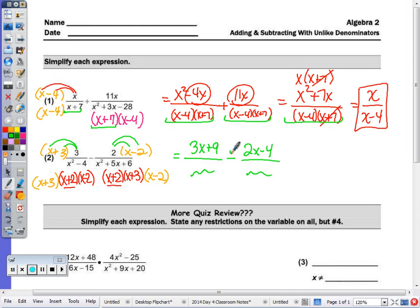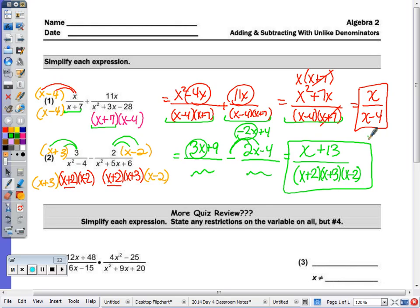So 3 times x plus 3 is 3x plus 9 over my denominator, minus 2x minus 4 over the denominator. So this is going to change the signs to negative 2x plus 4 and we end up with 3x minus 2x is x, 9 plus 4 is 13 all over x plus 2 times x plus 3 times x minus 2. And since the x plus 13 is not a factor of the denominator, we can't do any canceling so that's the final answer.